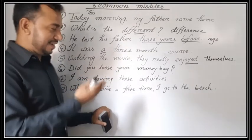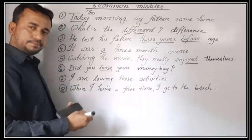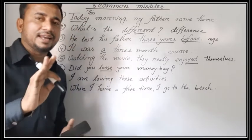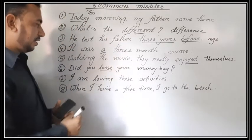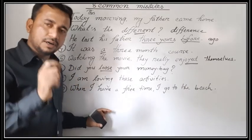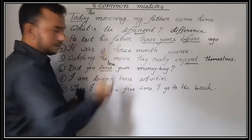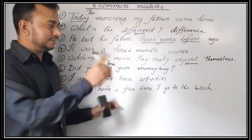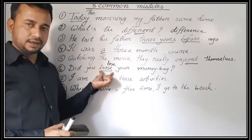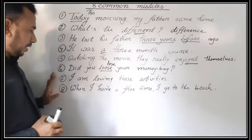Look at sentence number six: 'Did you lose your money bag?' What's wrong with this sentence? Yes, the wrong is 'lose' — it's a spelling mistake. 'Loose' is an adjective which means not tight. So it will be 'lose' — 'Did you lose your money bag?'